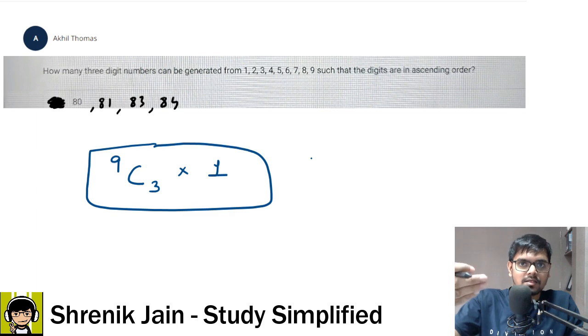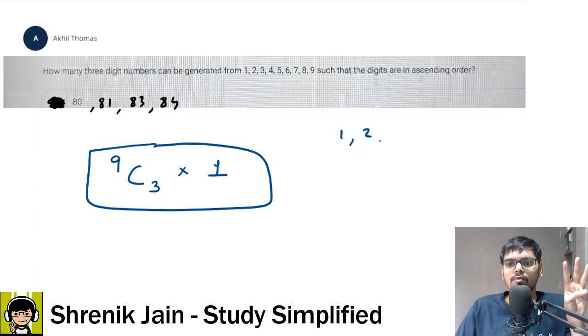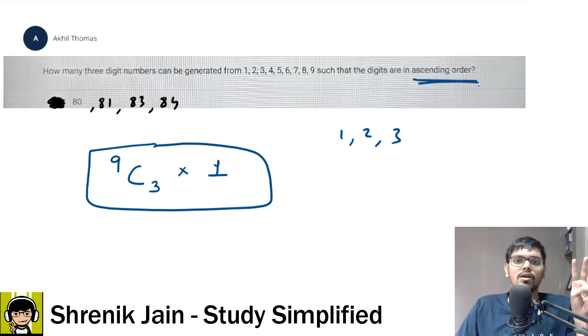See, out of nine digits, you selected three. For example, let us say you selected one, two and three. And then you are going to say, I want to arrange them such that they are in ascending order. So tell me the number of ways, number of possible arrangements, only one isn't it. So check it out.